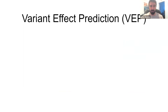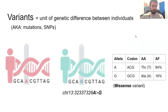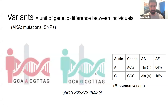Let me spend some time speaking about this challenge. When I say variants, I mean any unit of genetic difference between individuals. For example, if we have some DNA sequence, some people have an A nucleotide and some have a G nucleotide. If the sequence happens to be within a coding region, we substitute one codon with another, which leads to one amino acid changing into another — that is what we call a missense mutation.